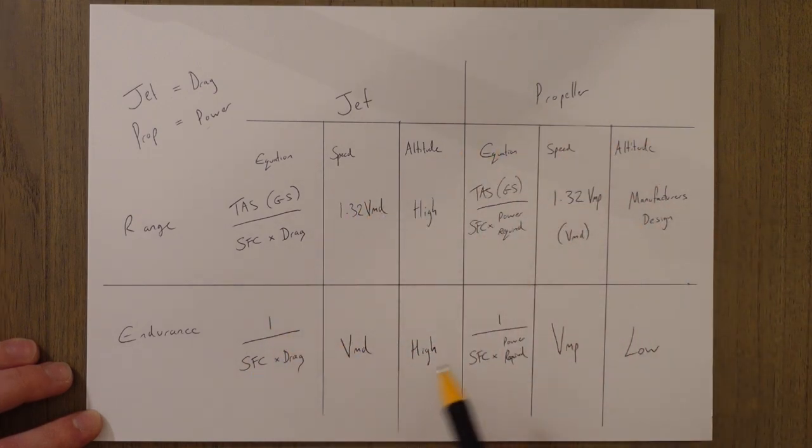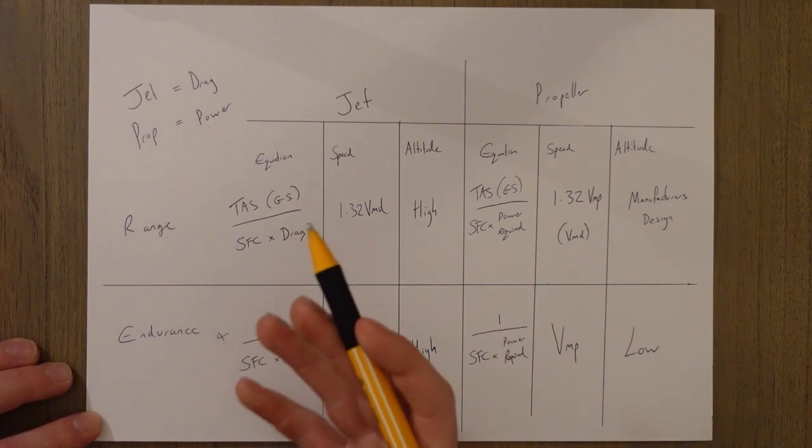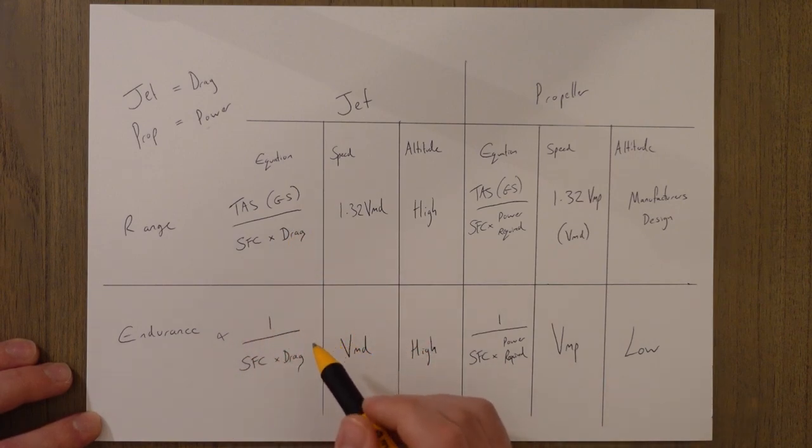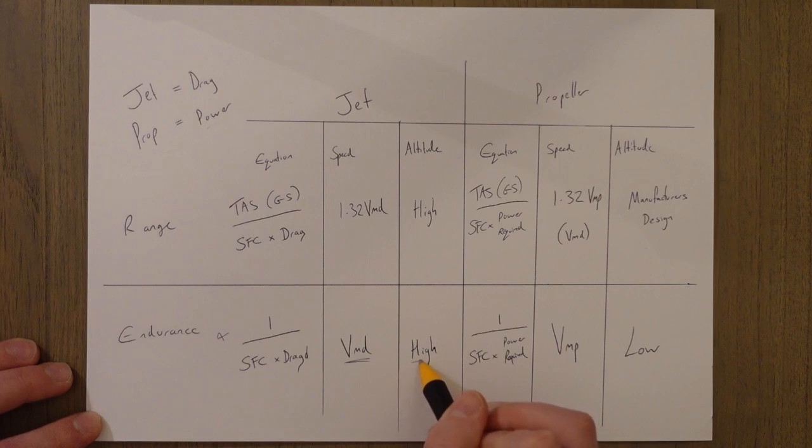So in today's class we looked at endurance which varies according to one over the specific fuel consumption times drag for a jet aircraft and we basically want to have the least amount of drag which is why we fly at Vmd and it's also why we fly up high.